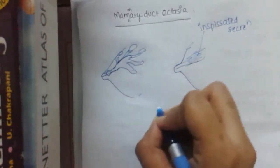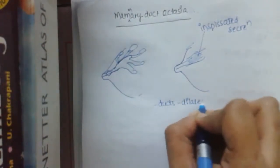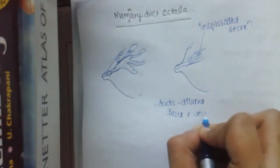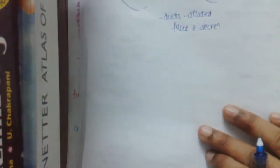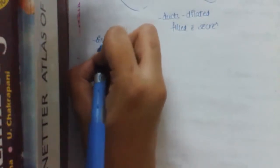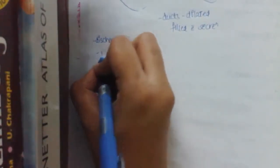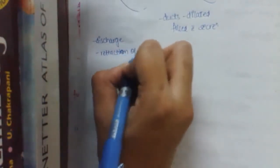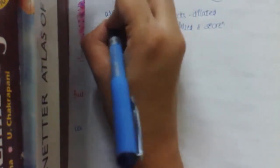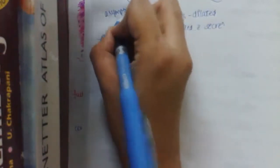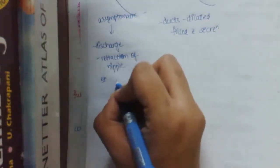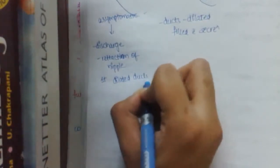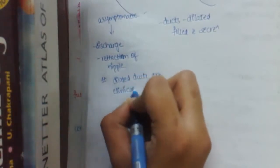So the breast, here ducts are dilated and filled with secretions. This commonly occurs in 40 to 70 years of age women. And these patients primarily remain asymptomatic. And later, there may be discharge or retraction of the nipple. Sometimes these dilated ducts are clinically palpable.